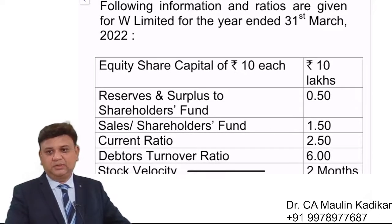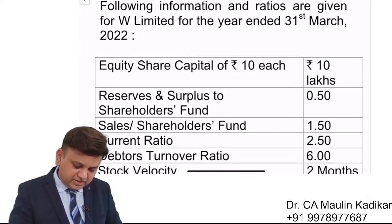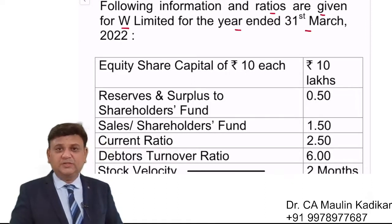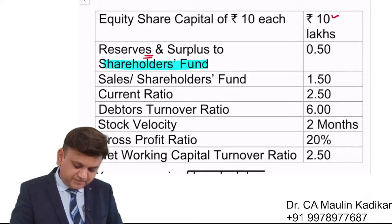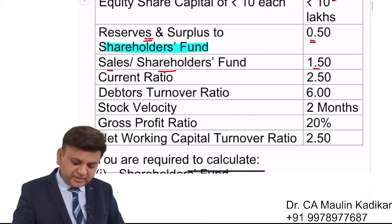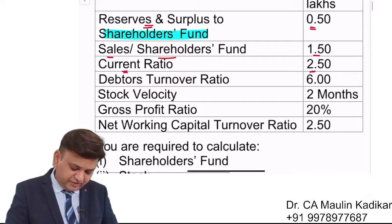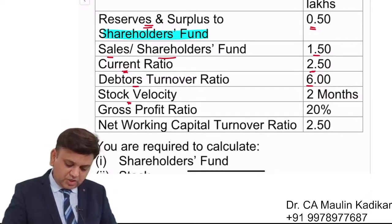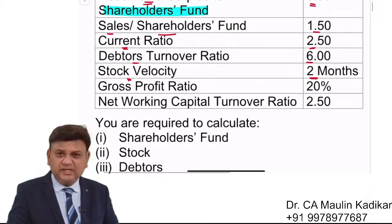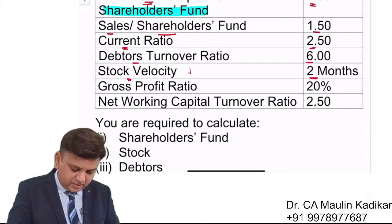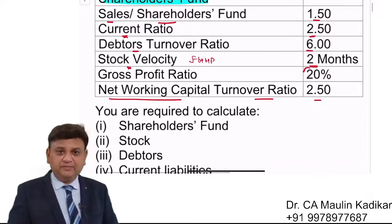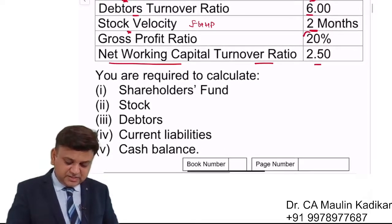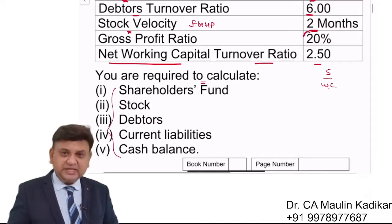Let us see the question. The following information and ratios are given for W Limited for the year ended 31st March 2022: Equity share capital 10 lakhs, reserves and surplus to shareholders funds is 0.50, sales to shareholders fund is 1.50, current ratio 2.5, debtors turnover ratio is 6, stock velocity is 2 months (finished goods holding period), GP ratio is 20%, and net working capital turnover ratio is 2.5 (sales upon working capital). You are required to calculate the answers to a few questions provided.